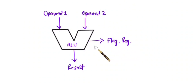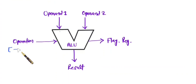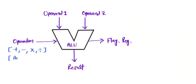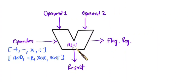We also need to give ALU one more input that defines what operation should be performed. Various operations can be there: arithmetic operations like addition, subtraction, multiplication, and division; logical operations like AND, OR, XOR, and NOT; and other operations like shift operations. We need to give what operation should be performed as input to this ALU.